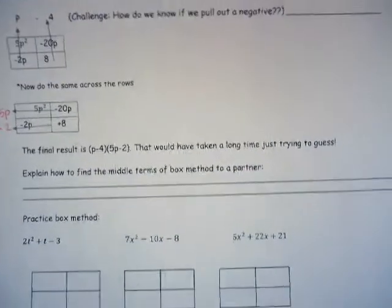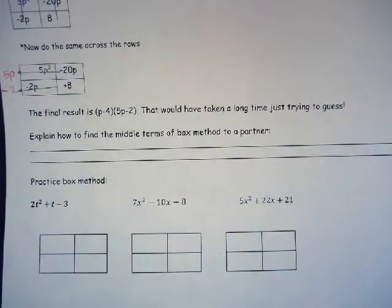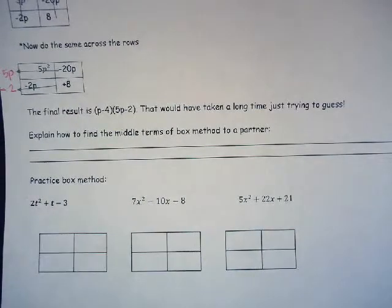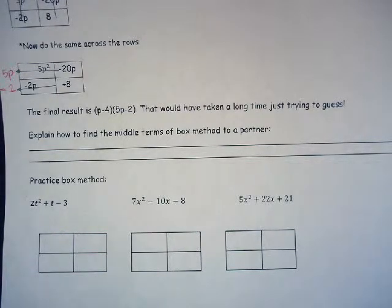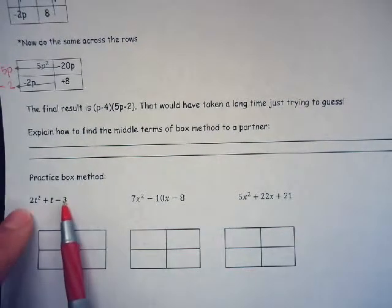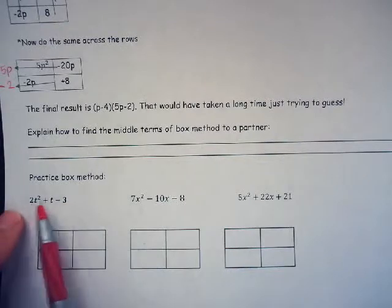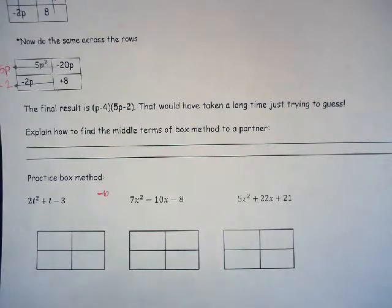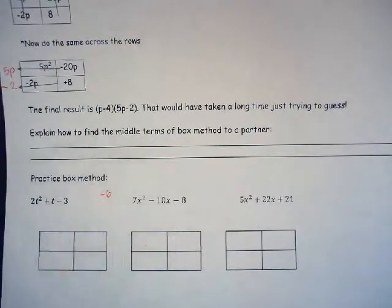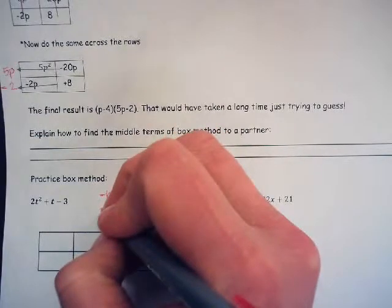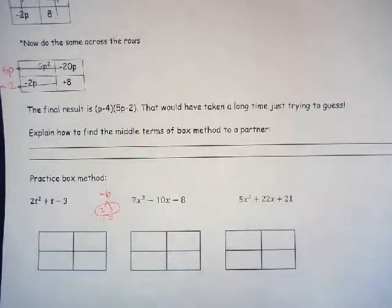I hope you paused the video and did that. Let's go down and try the box method three more times. During this practice, you should really pause the video, do it on your own, and then watch to see if you did it correctly. First: A times C — my first times my last — is negative 6. I need two factors of negative 6 that give me positive 1 in the middle. I'm going to use 2 and 3.